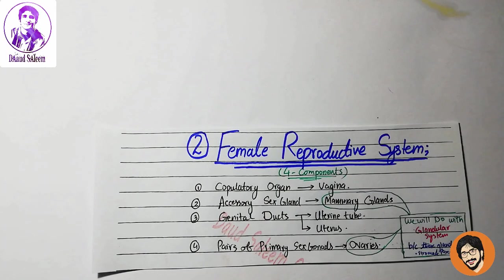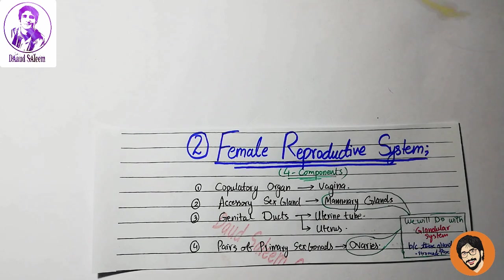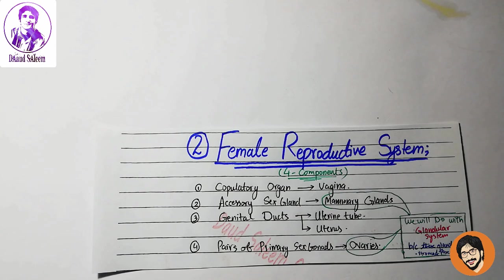Now let's start with our tubular system. What's left in the tubular system? We have the seminal vesicle.